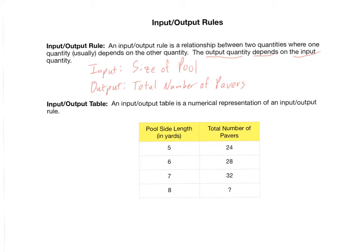We're going to study input-output rules from several different perspectives. The first is the input-output table — a numerical representation of an input-output rule. We put the input in the first column and the output in the second column. For a side length of five yards, 24 pavers are needed; for six yards, 28 pavers; and for seven yards, 32 pavers. An input-output table is a great way to organize your findings.